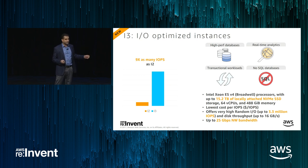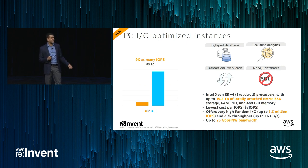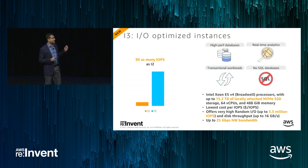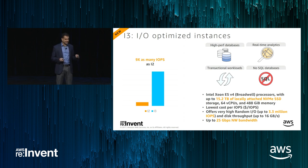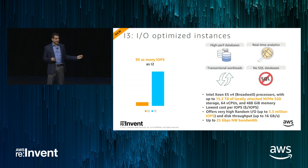For storage, there are two flavors: high-performance high-IO SSD storage and high-throughput magnetic storage. Our IO-optimized I3 instances are ideal for high-performance databases, real-time analytics, and transactional workloads, offering 3.3 million IOPS — nine times what we offered with the previous I2 generation. We're yet to find many workloads that don't take advantage of all these IOPS.